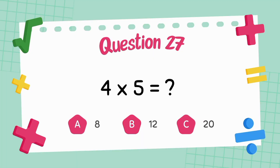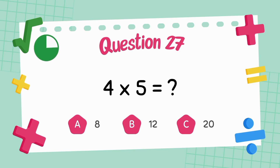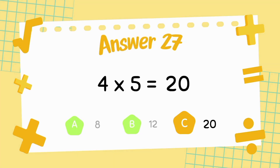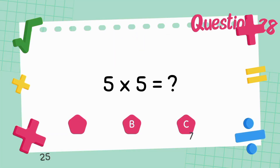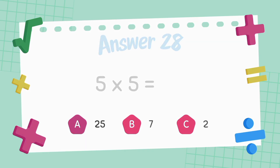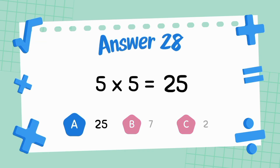What is four multiply five? What is five multiply five? The answer is twenty-five.